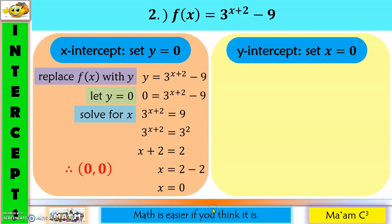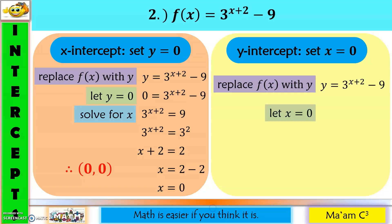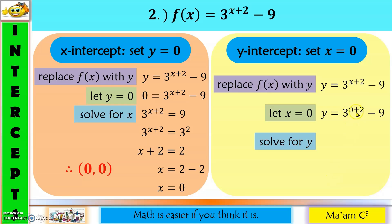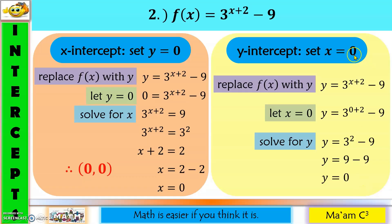For the y-intercept: replace f of x with y, then let x equal zero. So y equals three raised to zero plus two, minus nine. Zero plus two is two, so y equals three squared minus nine. Three squared is nine, and nine minus nine equals zero. My x is zero and my y is zero. Therefore, the y-intercept is (0, 0).